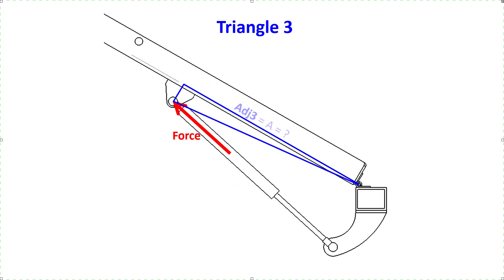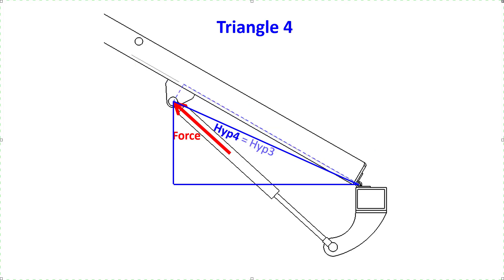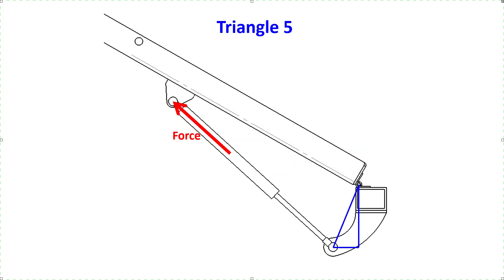Here's triangle number 3. The adjacent side is dimension A, which is what we are trying to determine in this force analysis. The opposite side is dimension D, which comes from the bracket we will be purchasing from McMaster. The hypotenuse can be determined with the Pythagorean theorem, and the angle can be determined with the inverse tangent function. Here's triangle number 4. The hypotenuse is equal to that of triangle number 3. The angle can be defined by taking the lid angle and subtracting the angle from triangle 3. The adjacent side can be determined from the cosine function and the opposite side from the sine function. Here's triangle number 5. The adjacent side is dimension E, the opposite side is dimension F, the hypotenuse can be determined using the Pythagorean theorem, and the angle can be determined from the inverse tangent function.